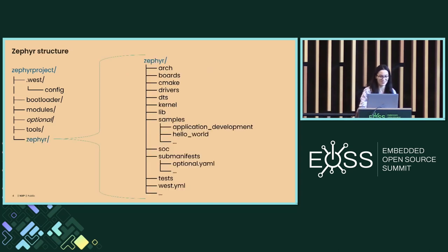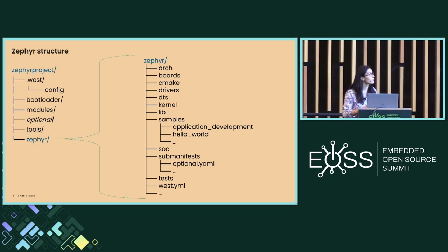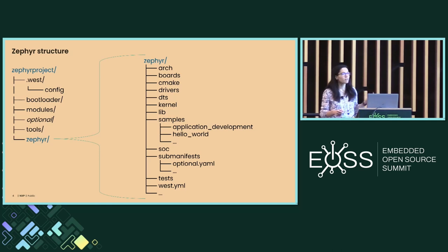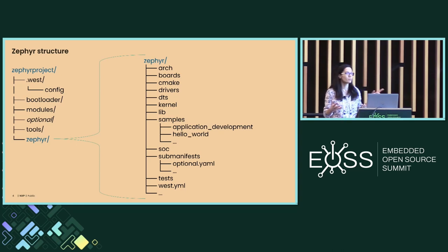The Zephyr repository is well-organized to facilitate development. It contains: architecture-specific files in arch, board configuration files in boards, build files in CMake, driver code in drivers. In DTS, we have device tree files defining non-discoverable hardware for specific boards. In kernel, architecture-independent kernel code. In lib, library code like the minimal standard C library. There are many samples, SoC files in soc, optional modules in sub-manifests, and tests. Additionally, configuration and build files like Kconfig, CMakeLists, and the main manifest WestYML.